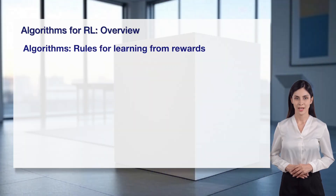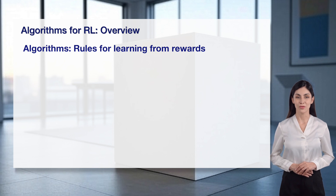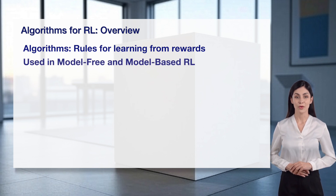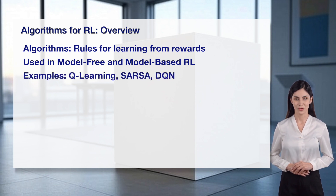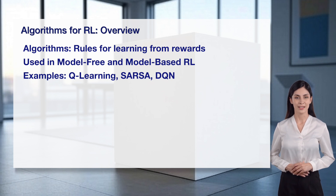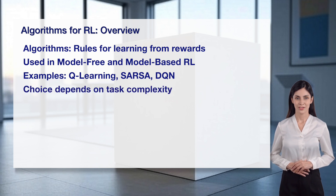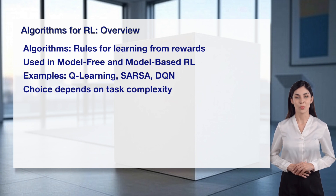Reinforcement learning relies on algorithms, which are the rules the agent uses to learn from rewards. These algorithms are used in both model-free and model-based RL, depending on the approach. Examples include Q-learning and SARSA for model-free RL, and DQN, which uses neural networks for complex tasks. The choice of algorithm depends on the task's complexity and the environment. Let's look at a few popular algorithms to see how they work in RL.